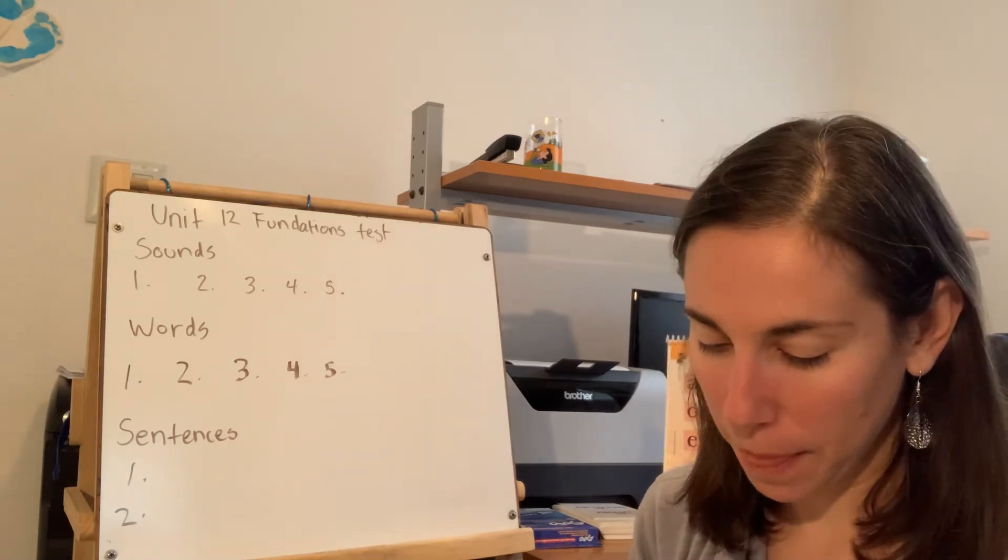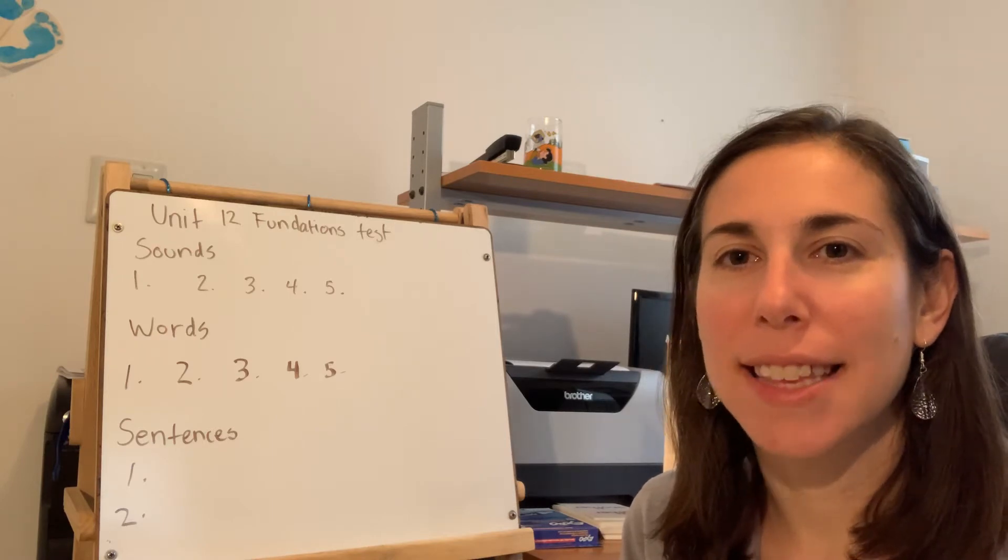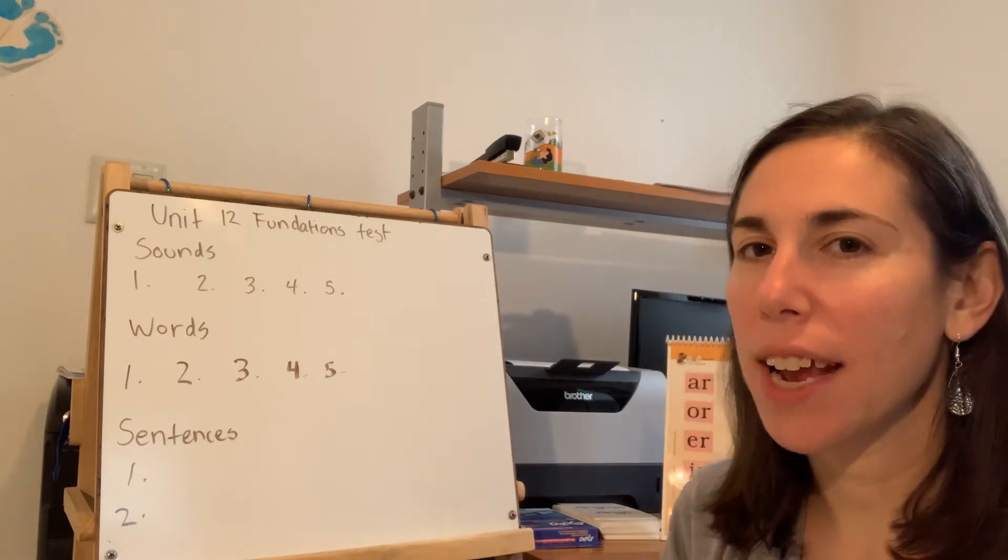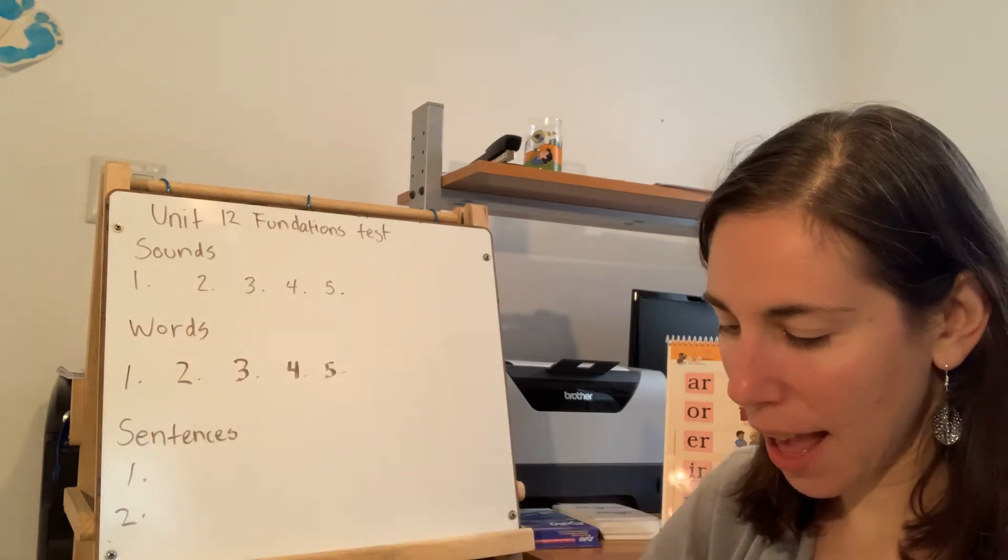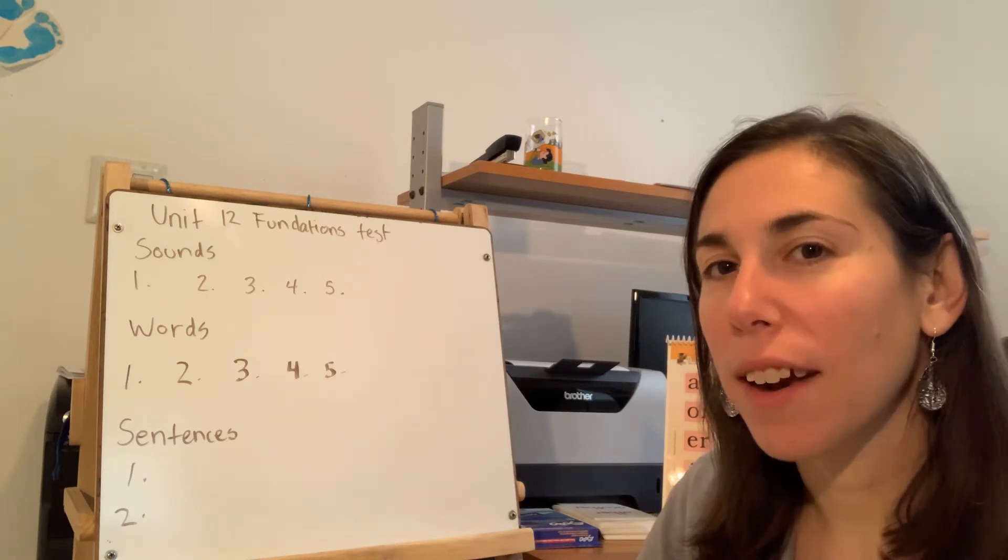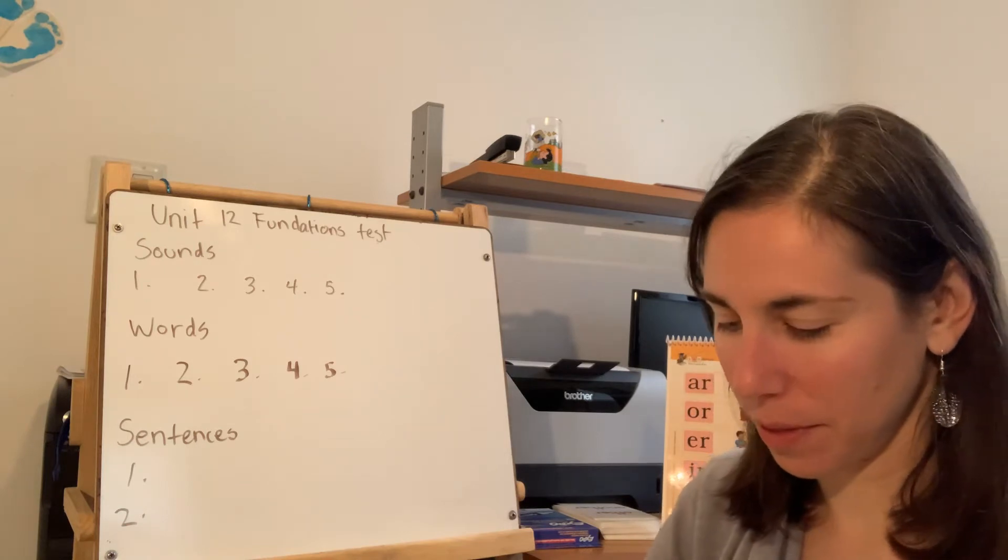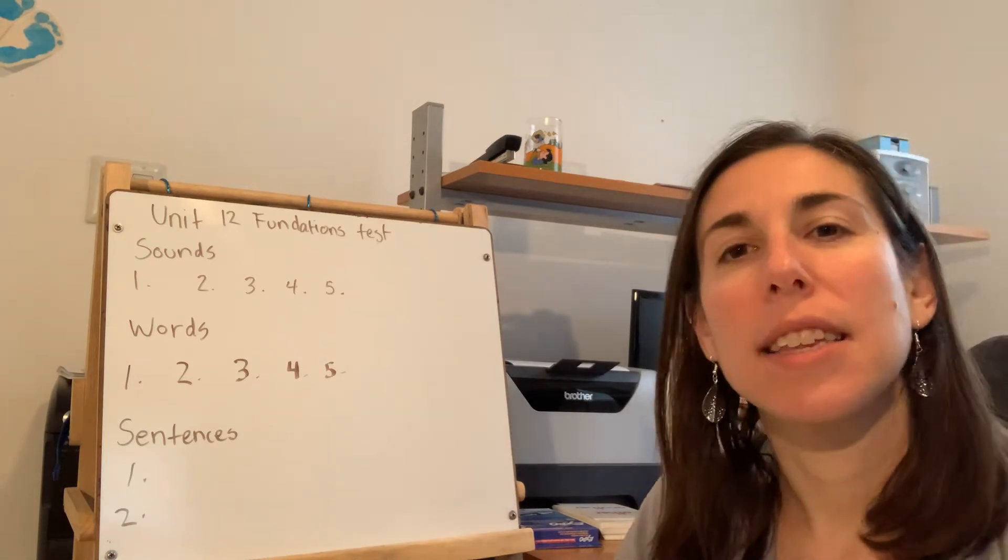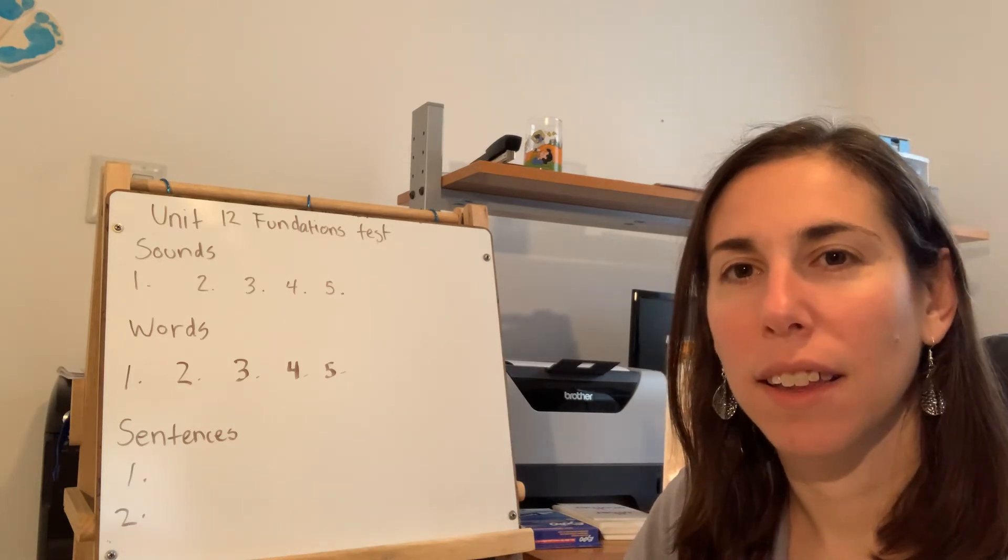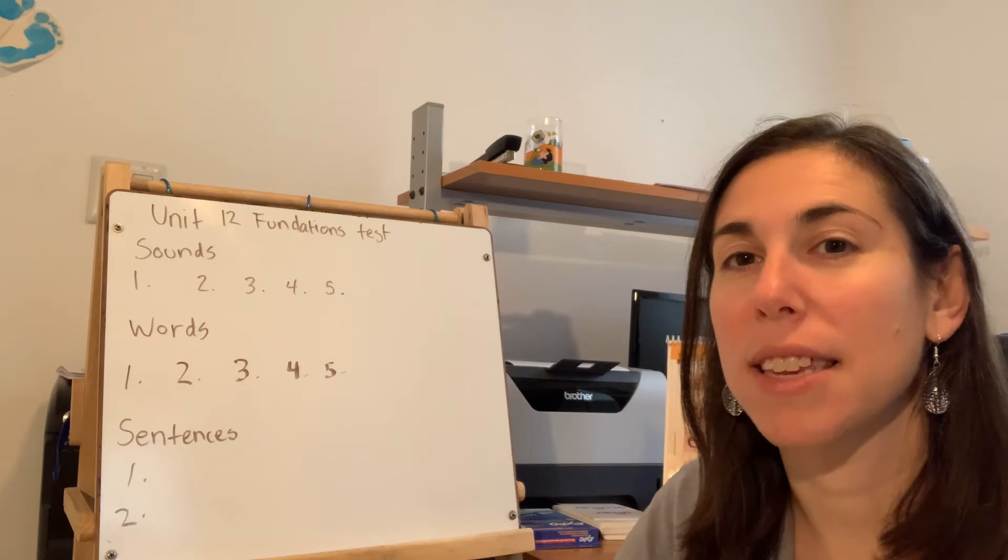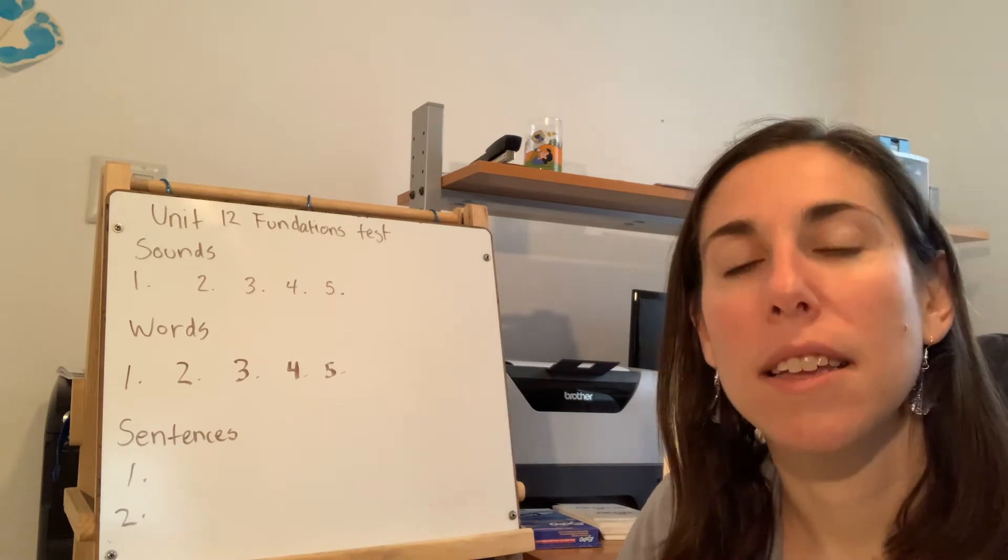First sound: Say z. What letter says z? Write z. Say a. What letter says a? Think about the right way to write that. Now number three, say k. What says k? There are three different ways to say k. Write those three ways.